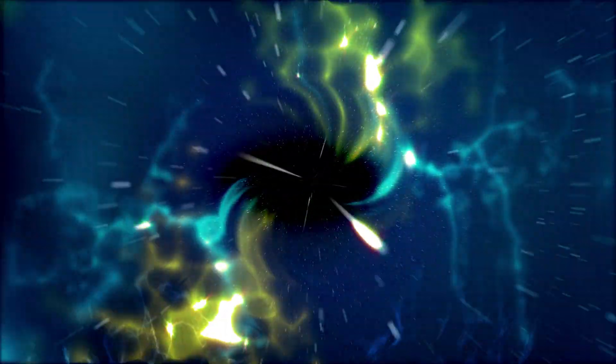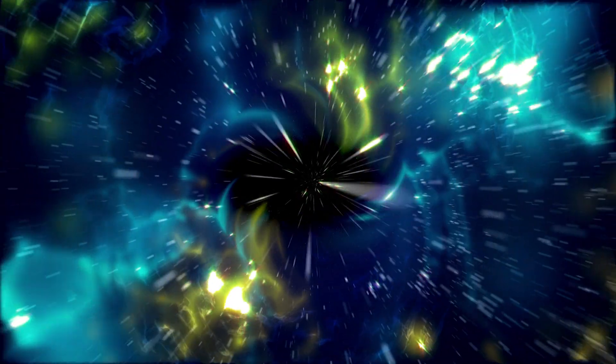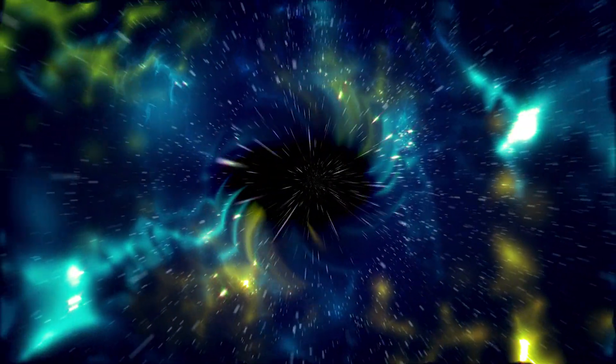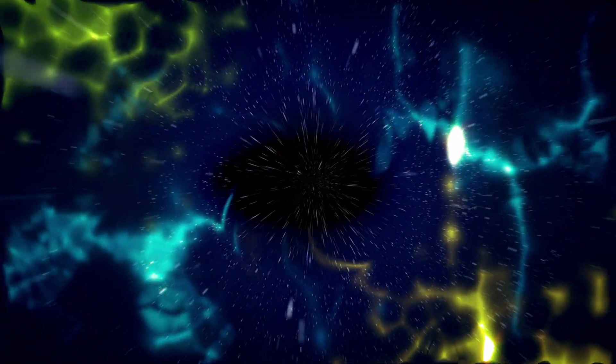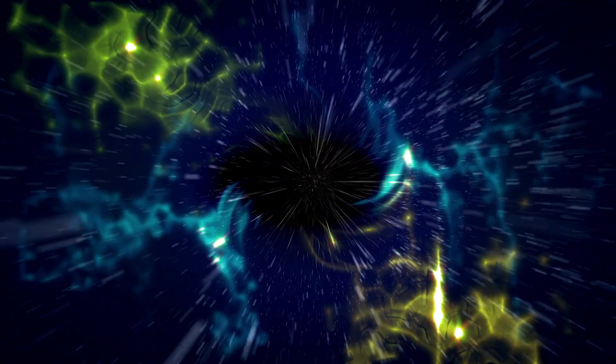Once the black hole starts eating nearby objects like stars or dust clouds, the infalling material heats up at the event horizon, therefore lighting up the region.